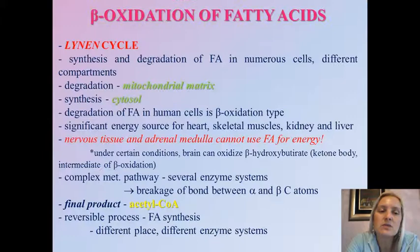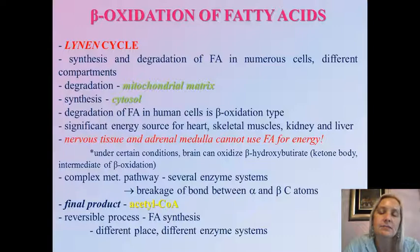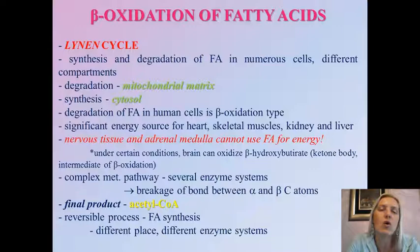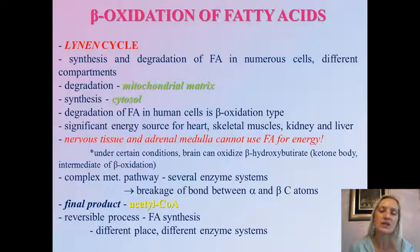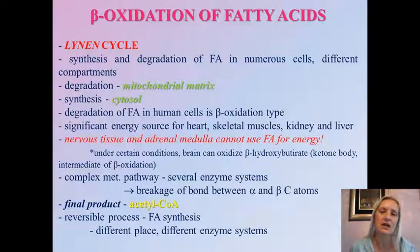Speaking of beta-oxidation of fatty acids, there is one other name which is not often used, but we should know it — it's Leinen's cycle. It is important to point out that the processes of synthesis and degradation of fatty acids occur in numerous cells, in almost all tissues and organs, but they are located in different cell compartments. Degradation of fatty acids occurs in mitochondrial matrix; biosynthesis occurs in cytosol, and we'll discuss that in an upcoming video.